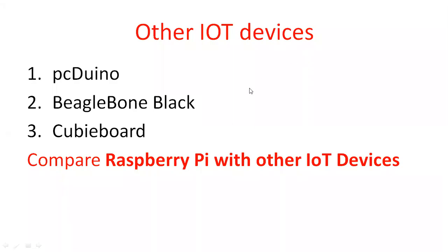In this session we're going to learn about other IoT devices and compare them. These include the PCDuino (PC plus Arduino), BeagleBone Black, and Cubieboard. We are comparing these other IoT devices with the Raspberry Pi — what is the Raspberry Pi, what are its elements, and how does it compare to these other devices.